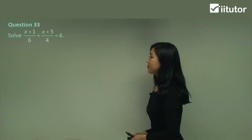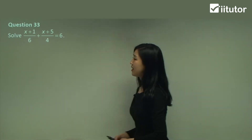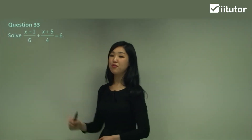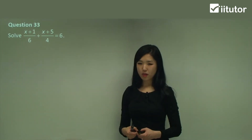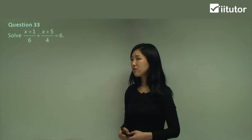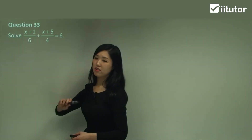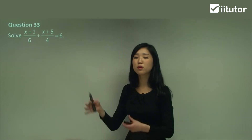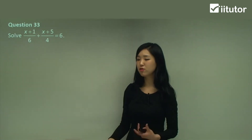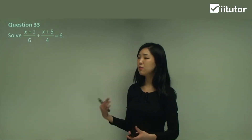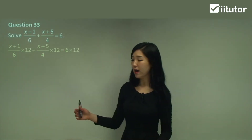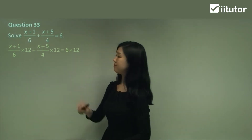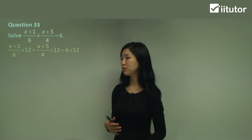Question 33. The denominators here are 6 and 4. What's the lowest common multiple? I think it's 12. But if you really can't think of the lowest common multiple, you can just multiply the two denominators together — 6 times 4 is 24. So you can multiply everything by 24 and you'll still get the same answer. But it's a little bit easier if you can use the lowest common multiple, so I'm going to multiply everything by 12, which is the LCM of 6 and 4.